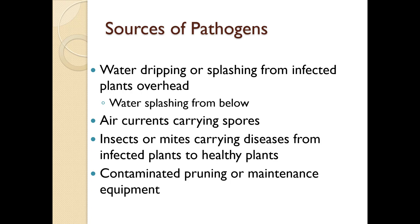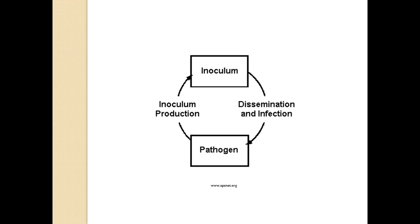This is the basic plant disease life cycle: the pathogen produces inoculum, a large quantity of it, and then it disseminates and creates infection. Some cycles are obviously more detailed, but this is the fundamental plant disease life cycle.